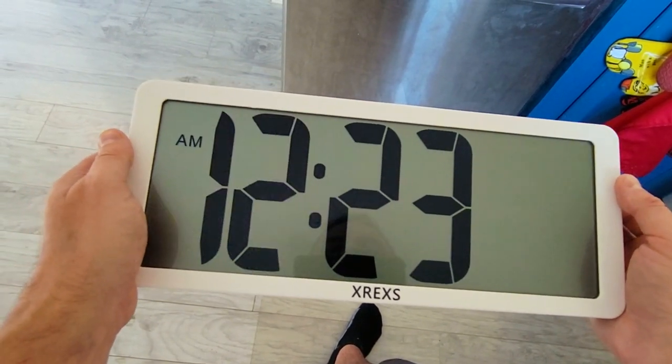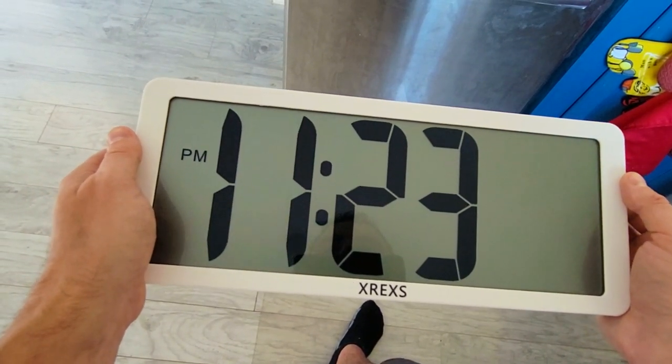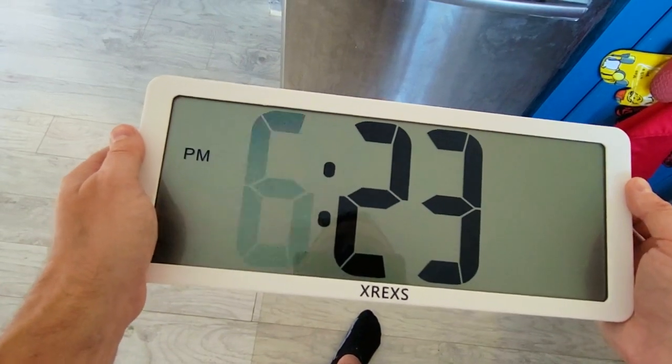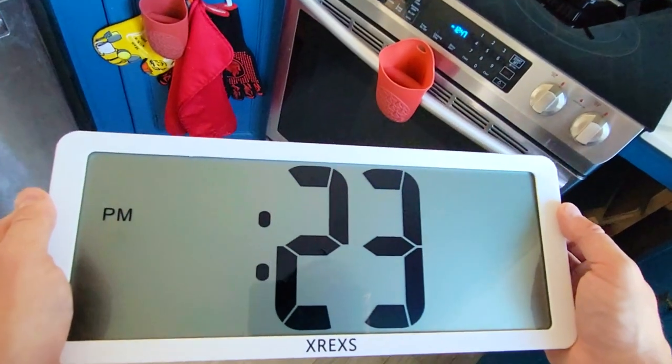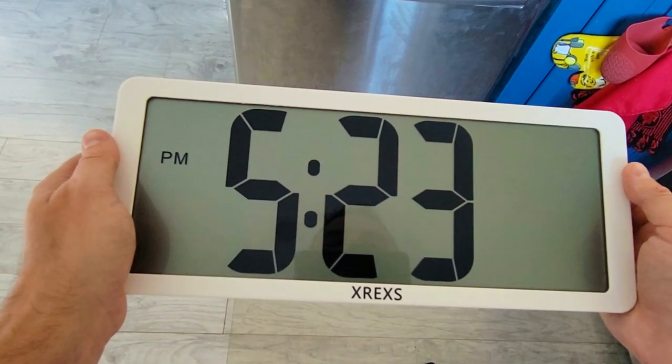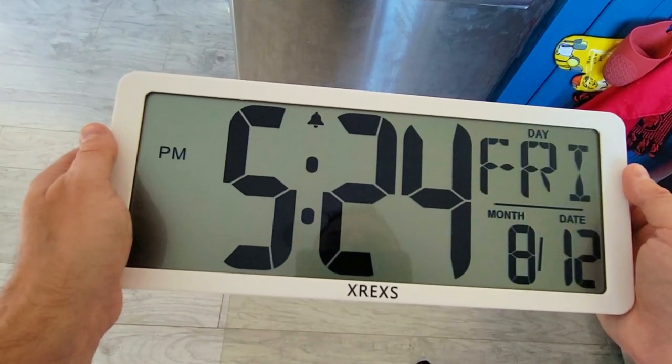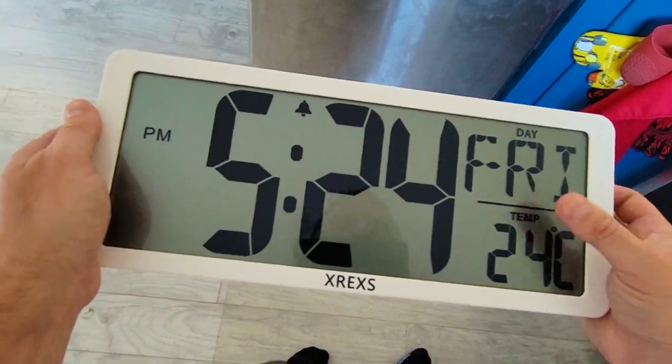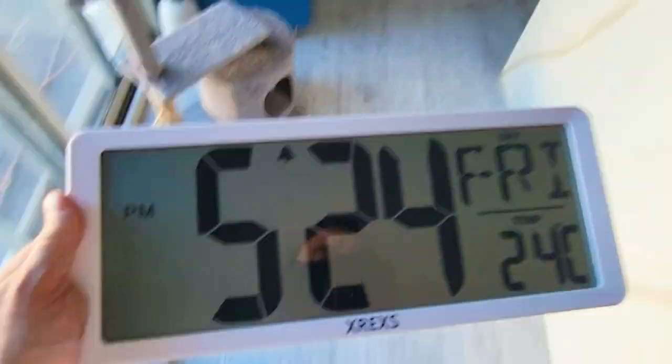So now we're going to change this to PM. It is currently 5, 24. 24, Friday, 24 degrees. 24 Celsius is correct, and I know this because we have a thermometer here that's showing 24.3.